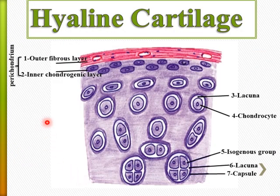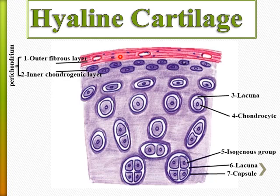This is a labeled diagram for the hyaline cartilage. Cartilage is avascular, taking its nutrition by diffusion through the surrounding tissues. The hyaline cartilage is surrounded with perichondrium, except at the articular surface of the joint. The perichondrium is formed of an outer fibrous layer.